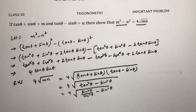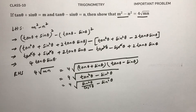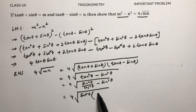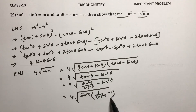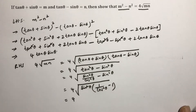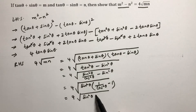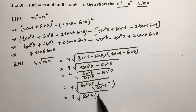Taking sin squared θ common from both terms, we get 4 under root of sin squared θ times (1 divided by cos squared θ minus 1). Now, 1 by cos squared θ is sec squared θ, so we have 4 under root of sin squared θ times (sec squared θ minus 1).